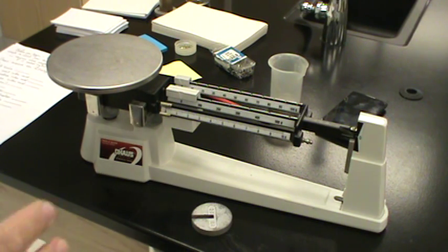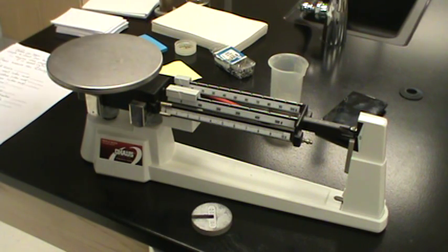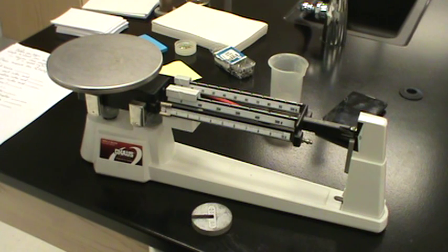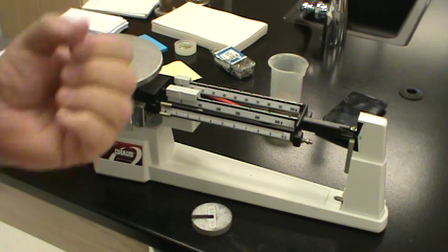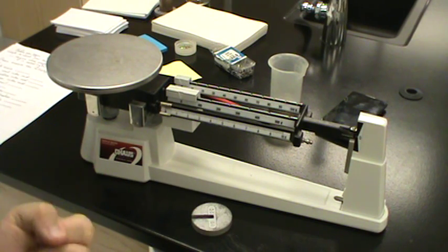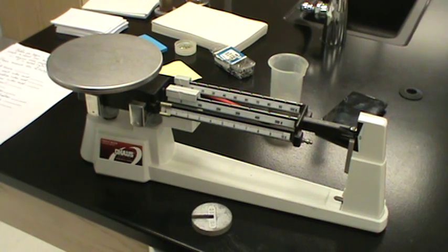So we use the triple beam balance to measure mass. And in our next video, we're going to do just that with some of these objects that are located right here. Mass is a function of how dense you are, how much stuff you're made out of, what your mass is, and how much gravity is pulling down on you. Mass. That's what we're getting ready to measure.